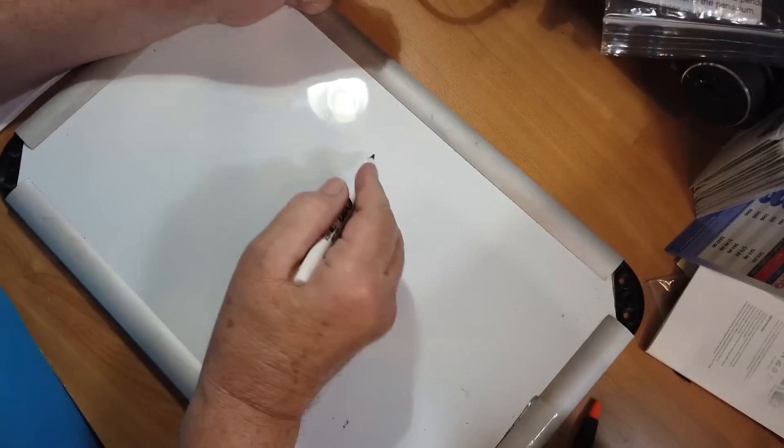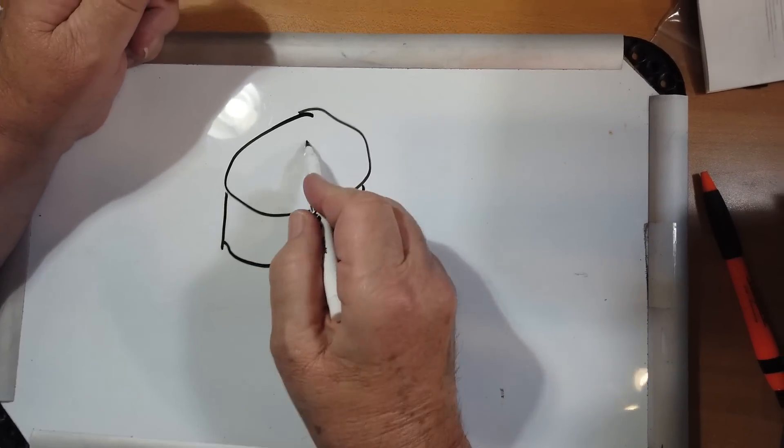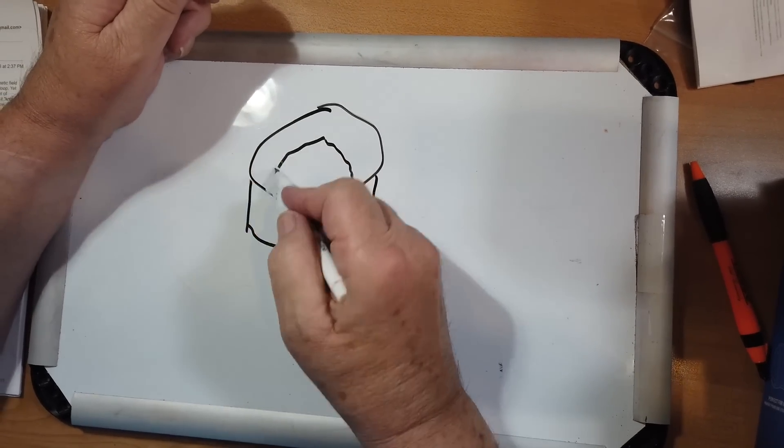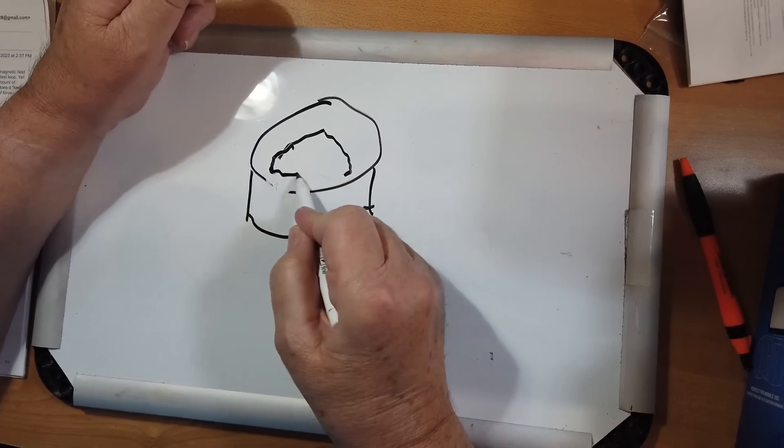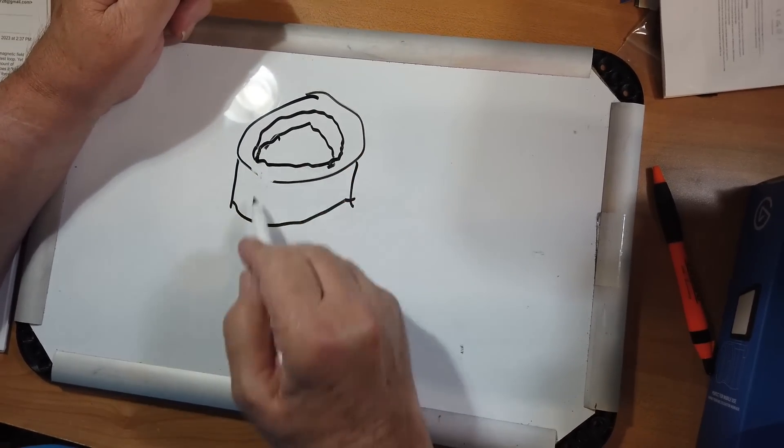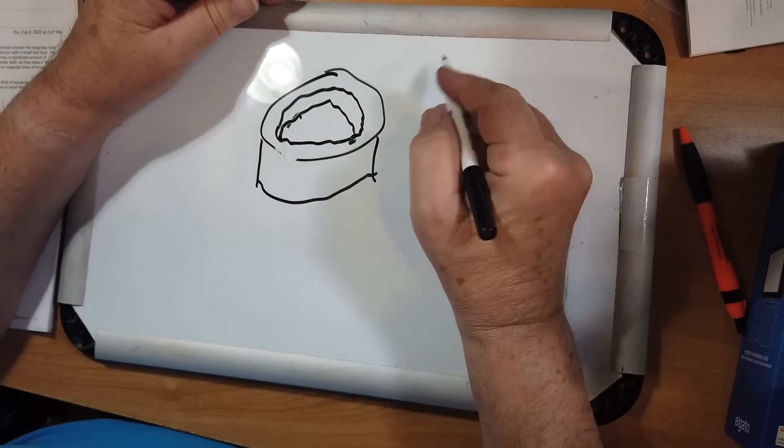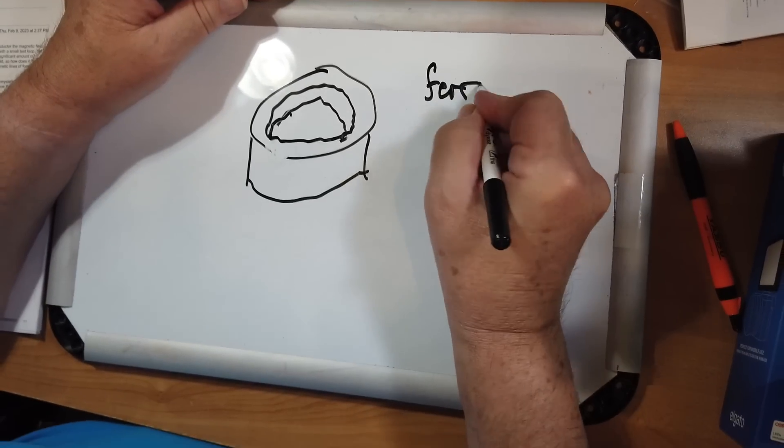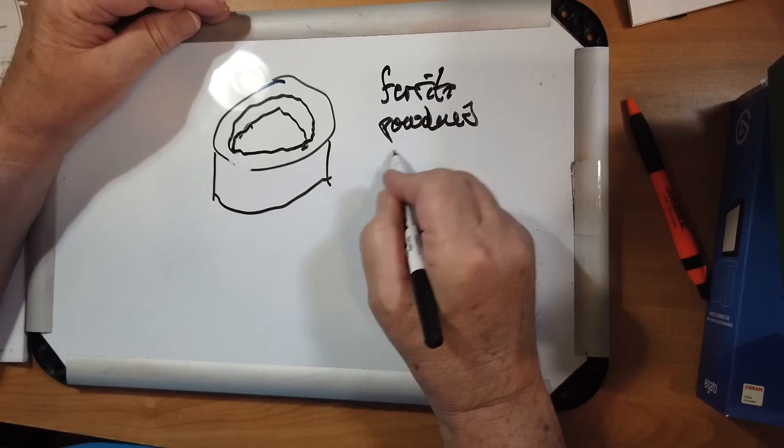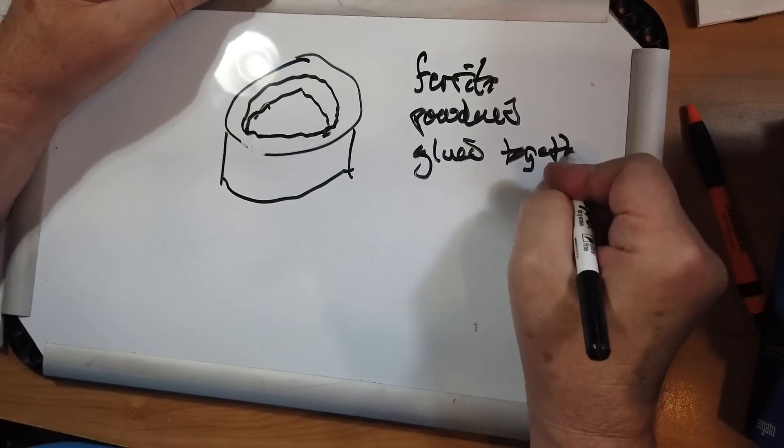A toroid is, they're often usually flat. They're more kind of cylinders. And here's the top of this one. Then it goes down, and you can see the wall in there. I'm a terrible drawer. But this is a toroid, and again, it's a ferrite material that's powdered and glued together.